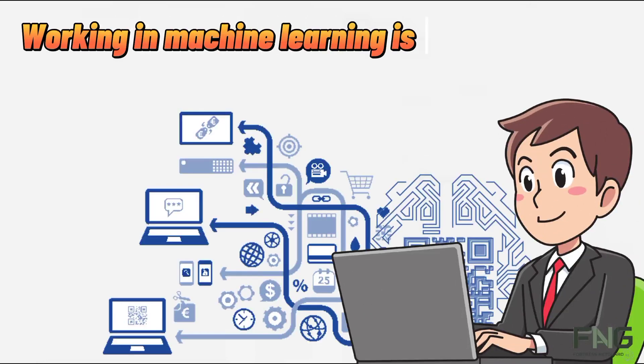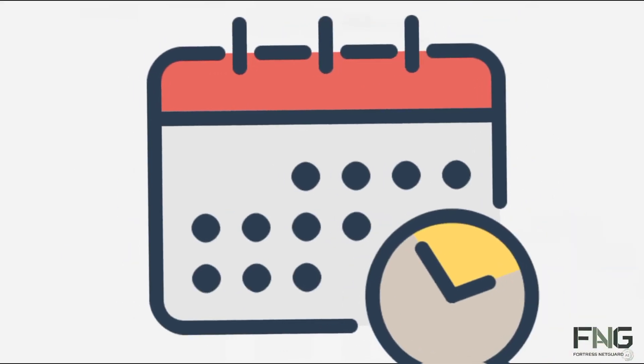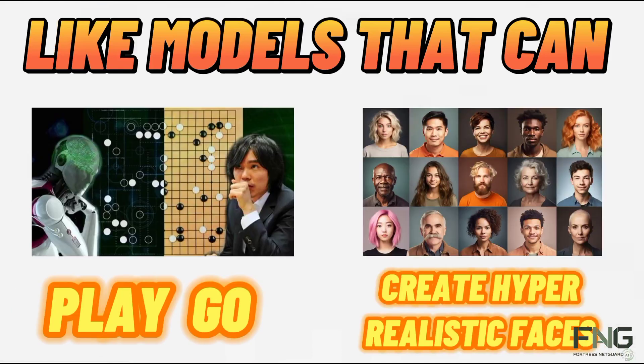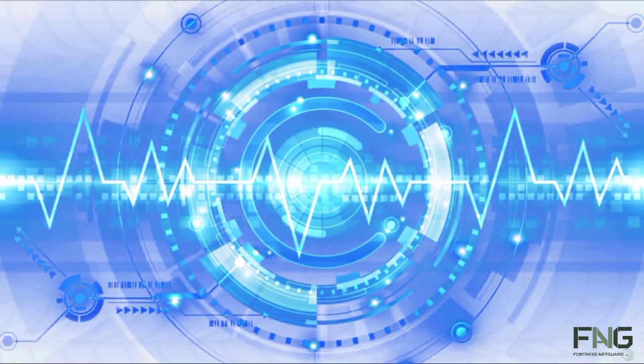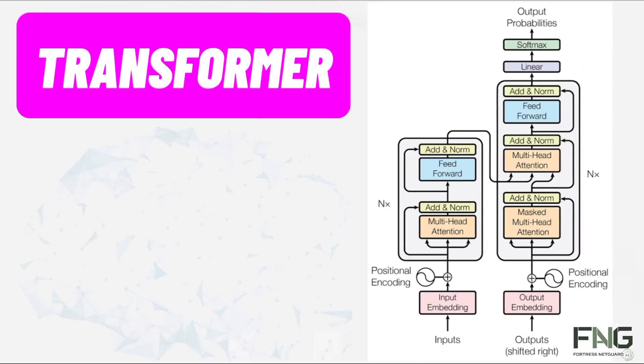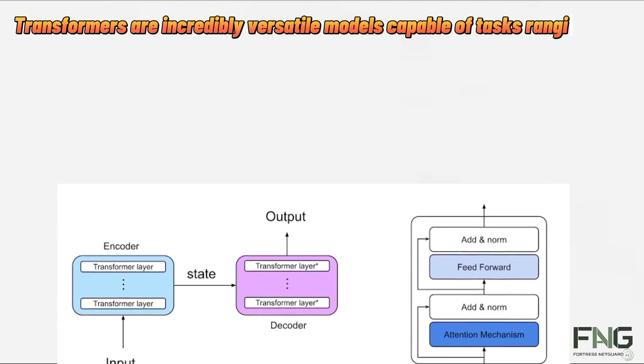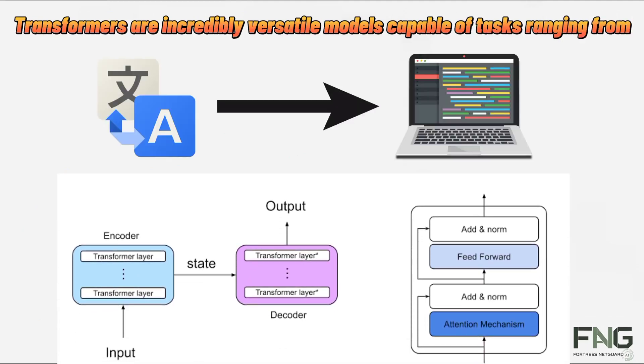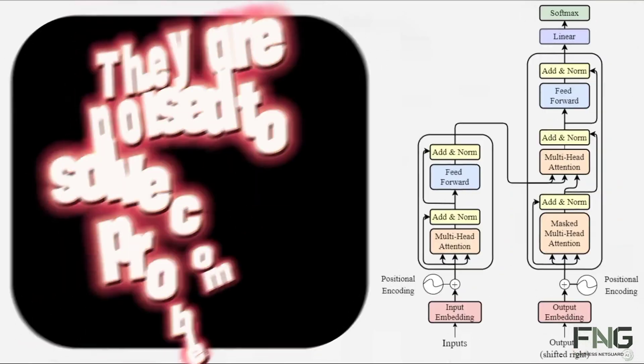Working in machine learning is always exciting because every few years someone invents something revolutionary, like models that can play Go or create hyper-realistic faces. Today the groundbreaking discovery that's captivating everyone's attention is the transformer, a type of neural network. Transformers are incredibly versatile models capable of tasks ranging from text translation to generating computer code.